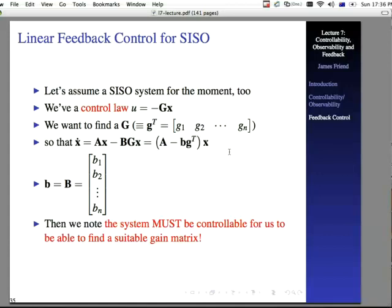For this to work, the system has to be controllable for us to be able to find a suitable gain matrix. So, that's really important. For us to be able to find a suitable gain matrix, this system must be controllable. You have to confirm this before you start looking for a gain matrix.